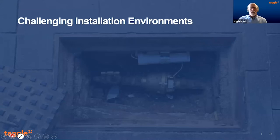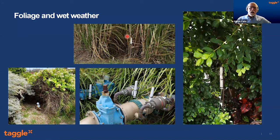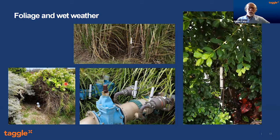The next thing we want to talk about is challenging installation environments. The places that change the most are where we've got things growing — foliage itself has a fairly high water content, so it can be difficult. All of these installs are working installations even though they're surrounded by green growth or cane fields. In cases of really heavy rain, you get a high water load on the leaves, and your reception strength can change — potentially blocking some data from that tag. Once everything dries out you'll be able to see it again.